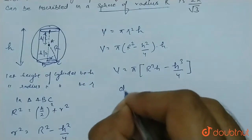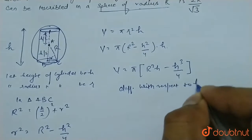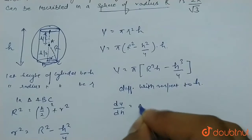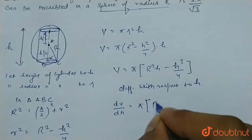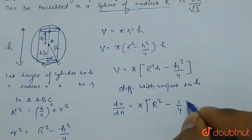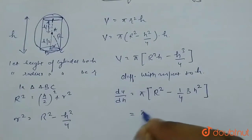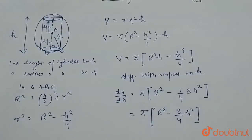Now we have to maximize this volume. So find differentiation. Differentiate with respect to h. So dV/dh equals π. This term is constant R², and the differentiation of R²h will be R². Minus, this is constant 1/4, and h³ differentiation will be 3h². Now we can say that dV/dh is π(R² - 3h²/4).